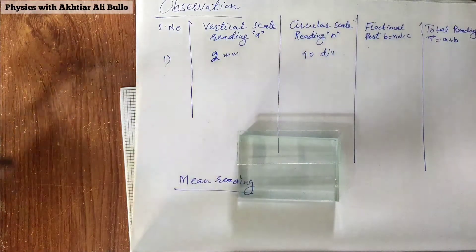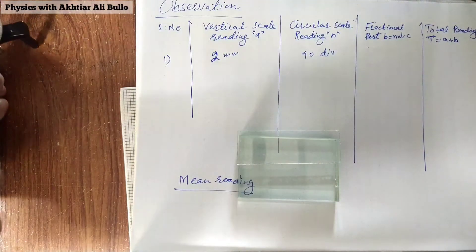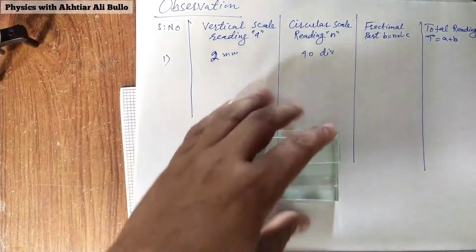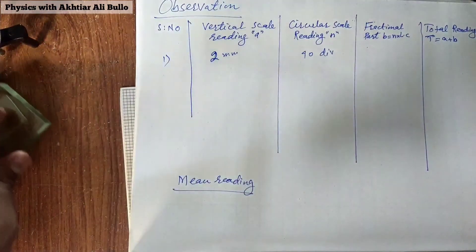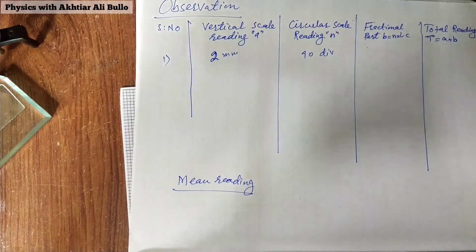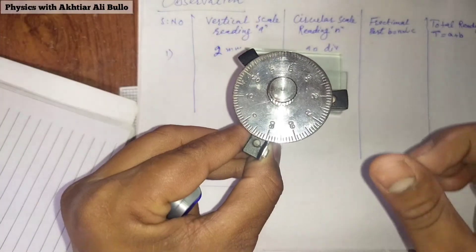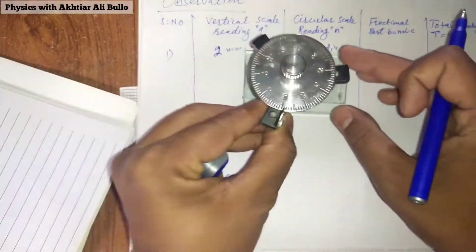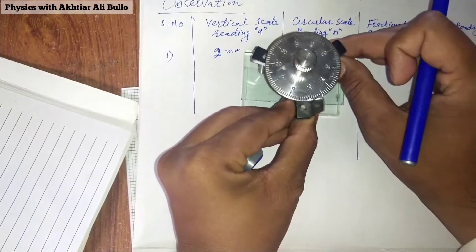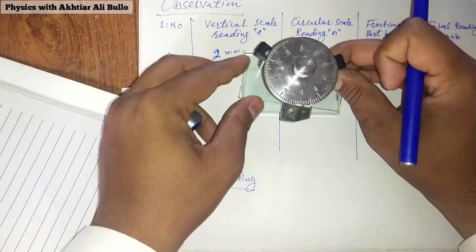Like this we will take at least three readings. Then we will make calculations. We will take another reading by placing the glass strip like this.